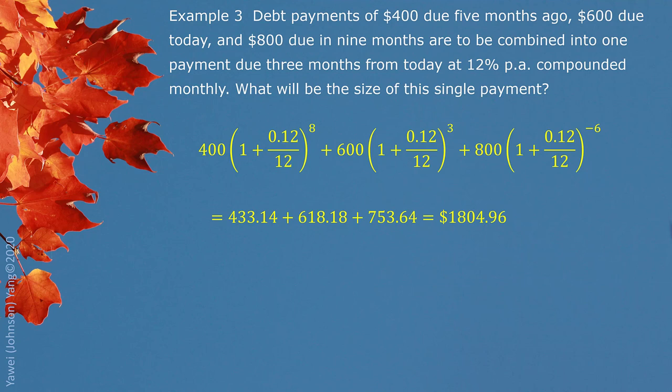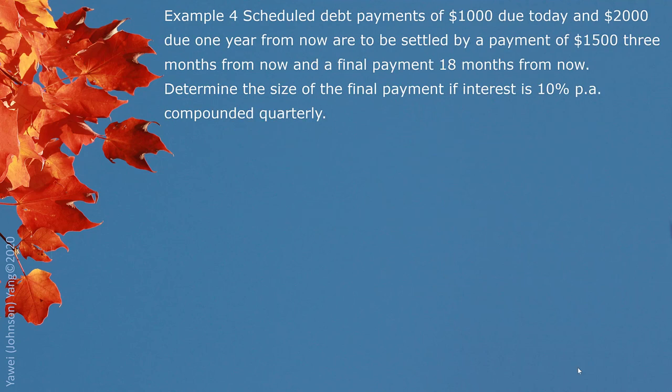We find the single equivalent payment is $1,804.96. Example 4: scheduled debt payments of $1,000 due today and $2,000 due one year from now are to be settled by a payment of $1,500 three months from now and a final payment 18 months from now. Determine the size of the final payment if interest is 10% compounded quarterly.